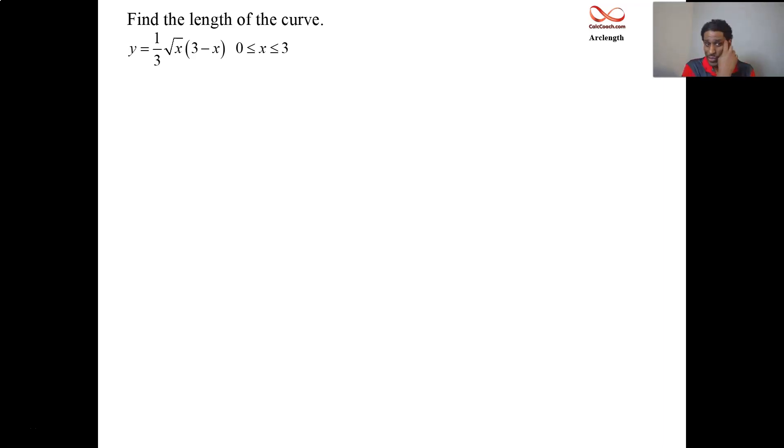The function is given to us in this manner. We're interested in walking along the curve from x equals 0 to x equals 3. You'll see that when x is 0, you're at a height of 0. When x is 3, you're at a height of 0. We want to know, what is the arc length covered during that walk?